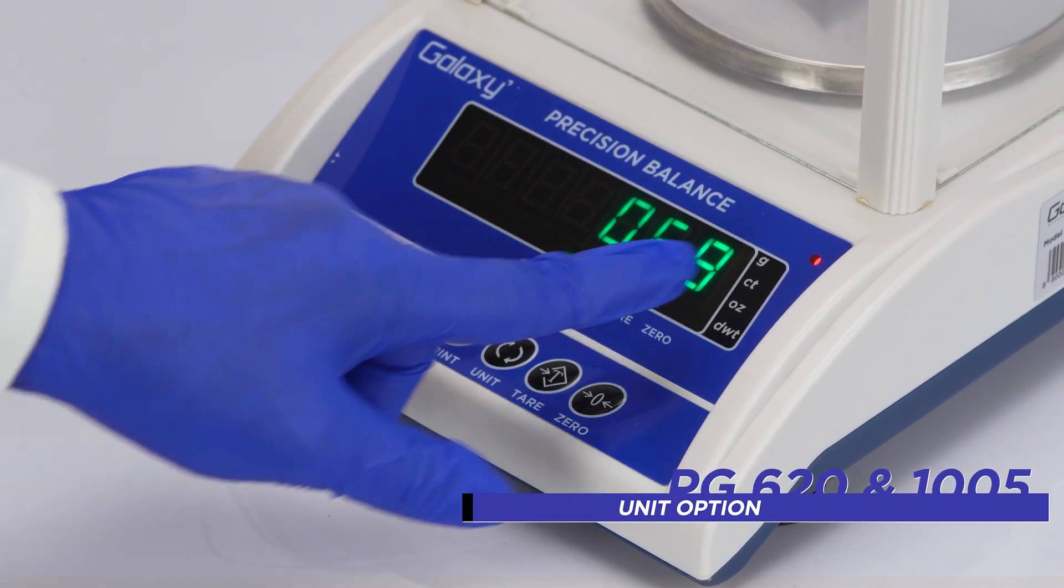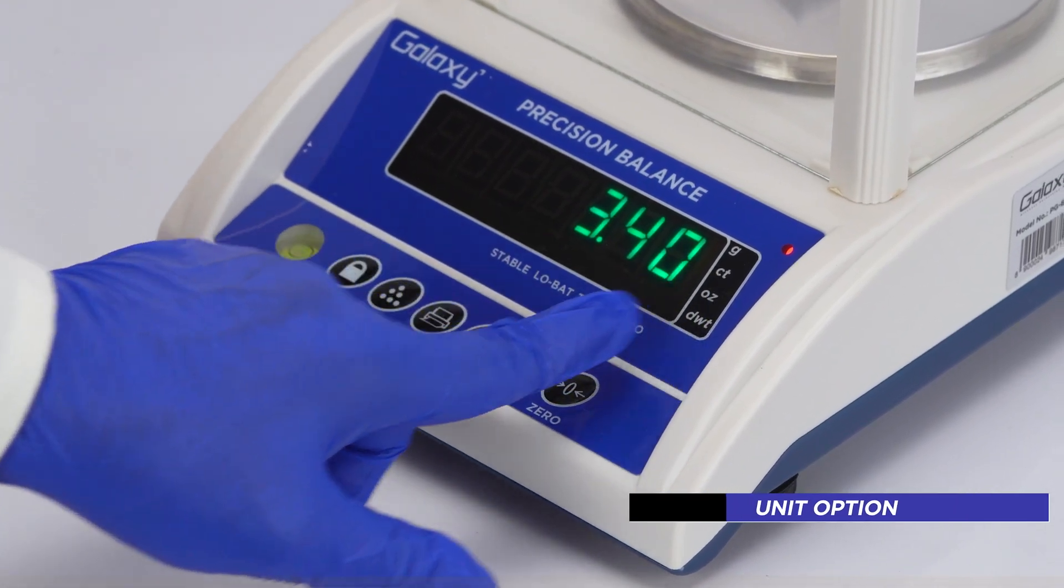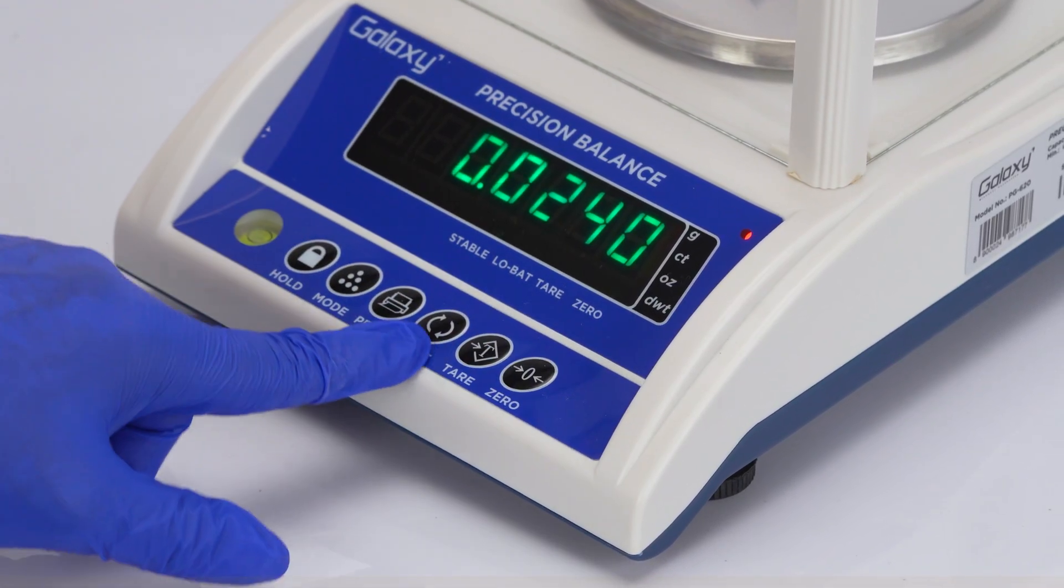To toggle between different units such as grams, carats, ounces and metric tons, press the unit key.